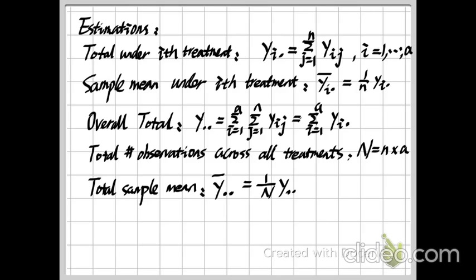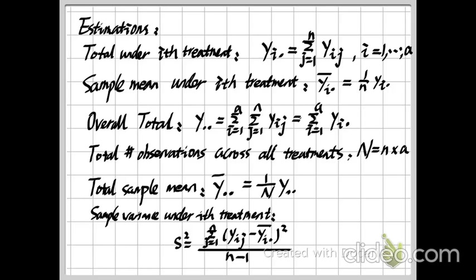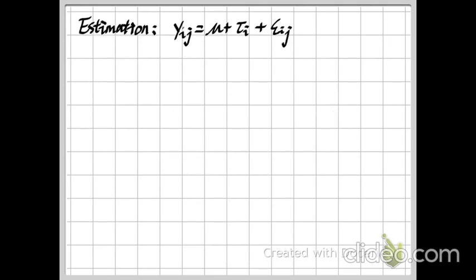We also need the sample variance under each treatment. Based on these estimations, we can always use the sample information to estimate population values. In our last video, we defined the model: yij equals mu plus tau_i plus epsilon_ij, where mu is the overall mean, tau_i is the effect of each treatment, and epsilon_ij is the error variance.